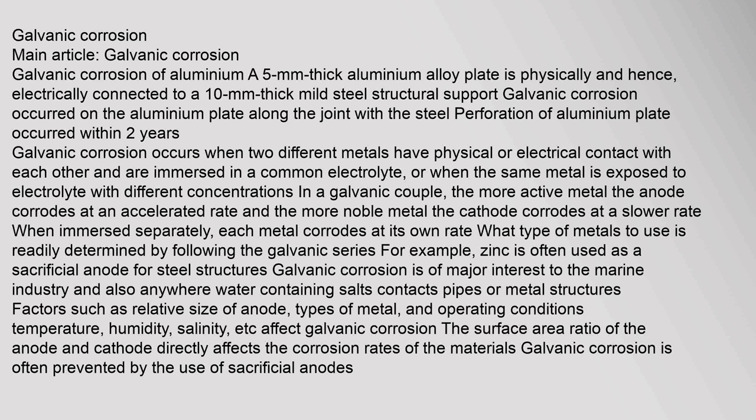In a galvanic couple, the more active metal — the anode — corrodes at an accelerated rate, and the more noble metal — the cathode — corrodes at a slower rate. When immersed separately, each metal corrodes at its own rate. What type of metals to use is readily determined by following the galvanic series. For example, zinc is often used as a sacrificial anode for steel structures. Galvanic corrosion is of major interest to the marine industry and anywhere water containing salts contacts pipes or metal structures. Factors such as relative size of anode, types of metal, and operating conditions — temperature, humidity, salinity — affect galvanic corrosion. The surface area ratio of the anode and cathode directly affects the corrosion rates of the materials. Galvanic corrosion is often prevented by the use of sacrificial anodes.